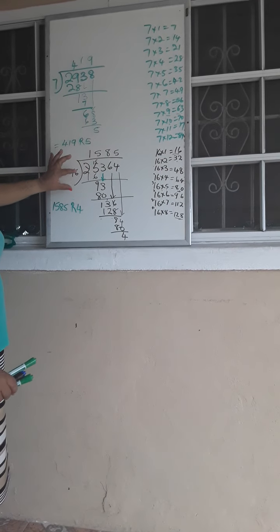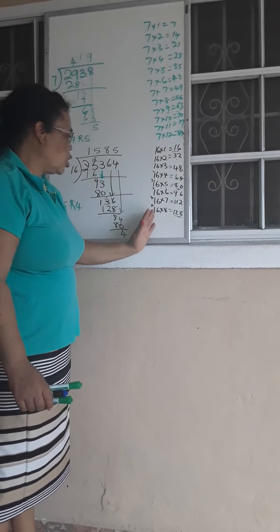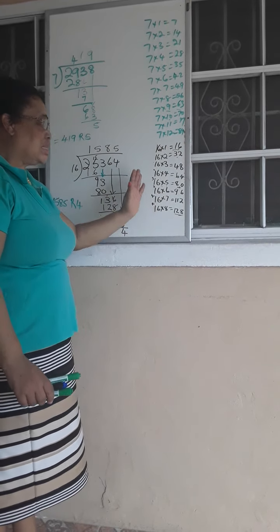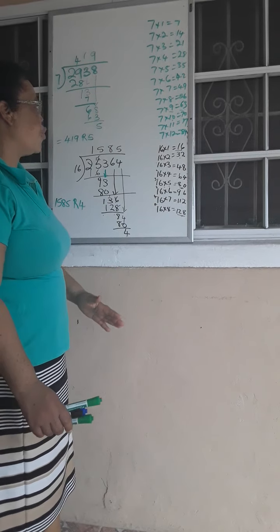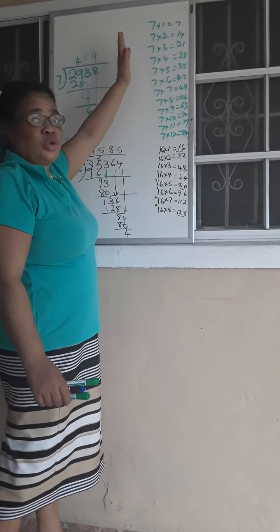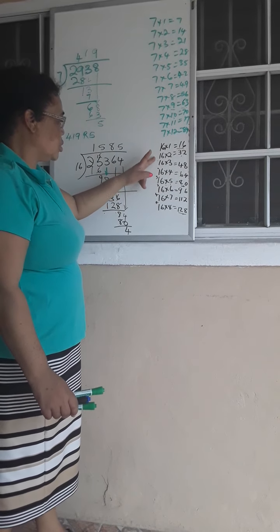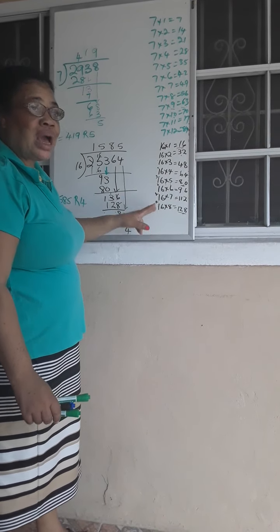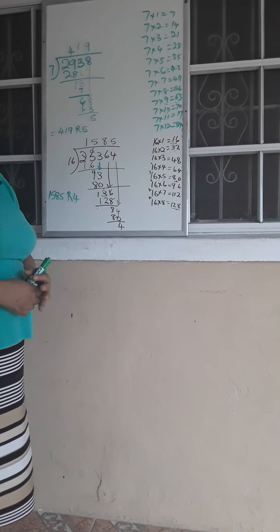But the key is, before you start doing your division problem, make sure that you write out your multiplication problem on the side of your problem. Don't wait to go to the back of your book to look for it. Write it out. Make sure you know it. Make sure you know how to do it. You write it out on the side of the problem, and then it's going to be absolutely easy for you to do your division. Thank you.